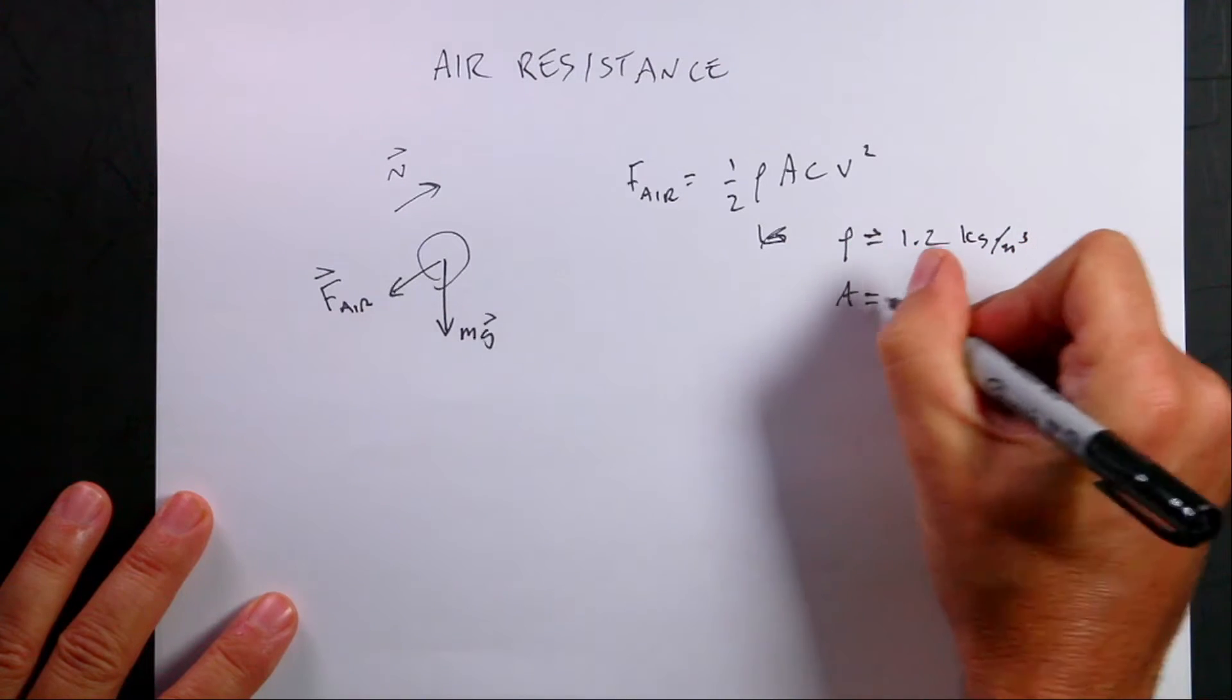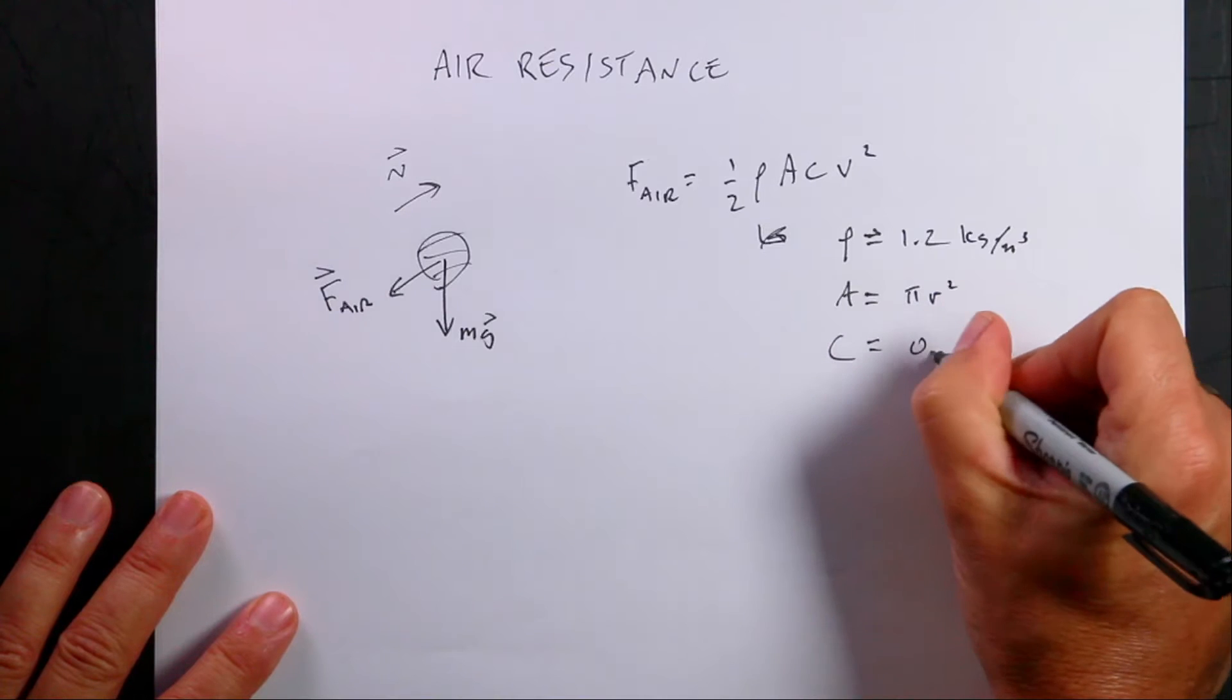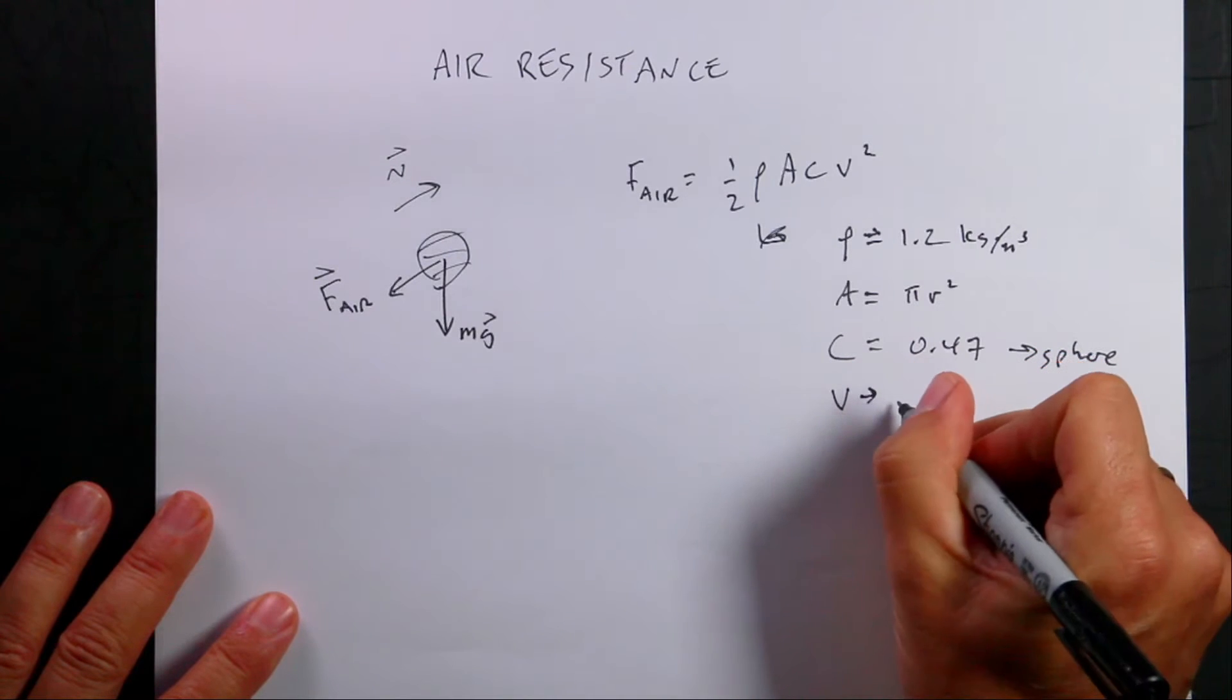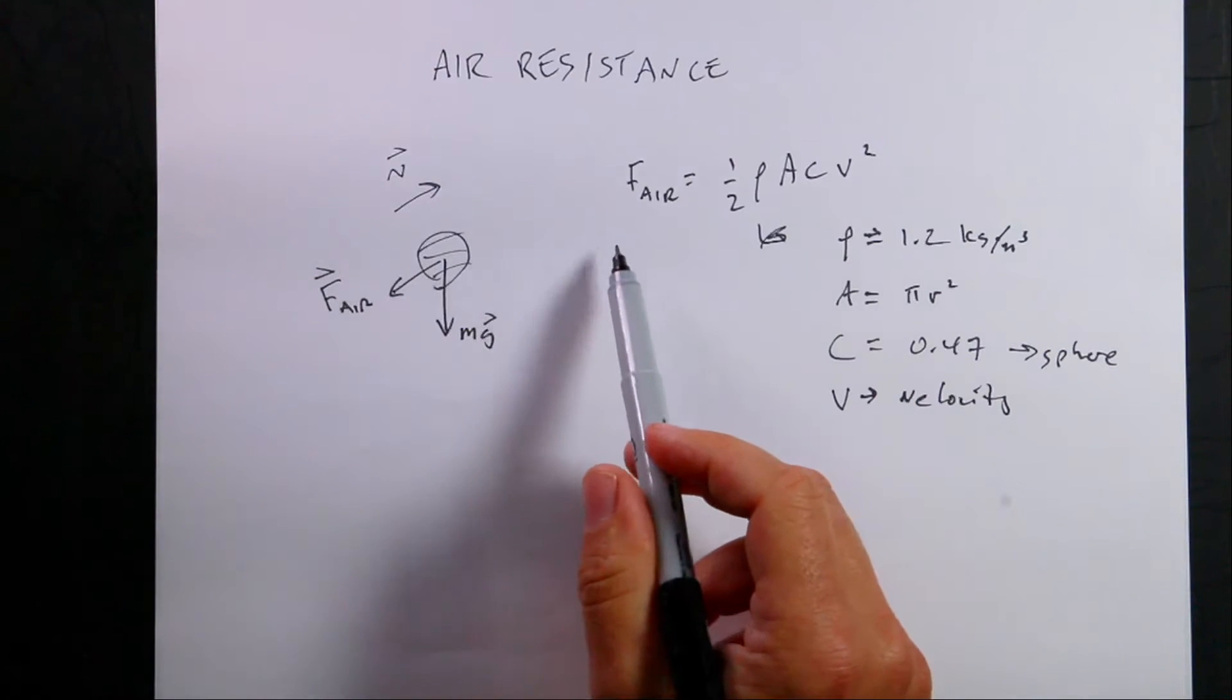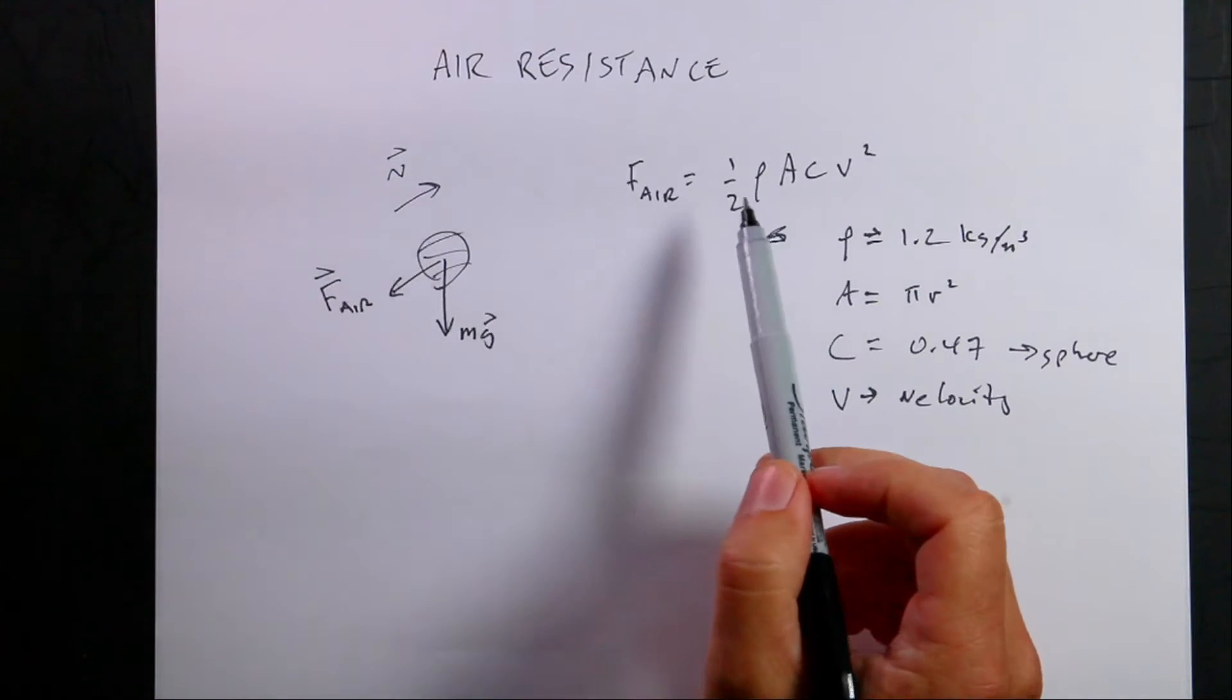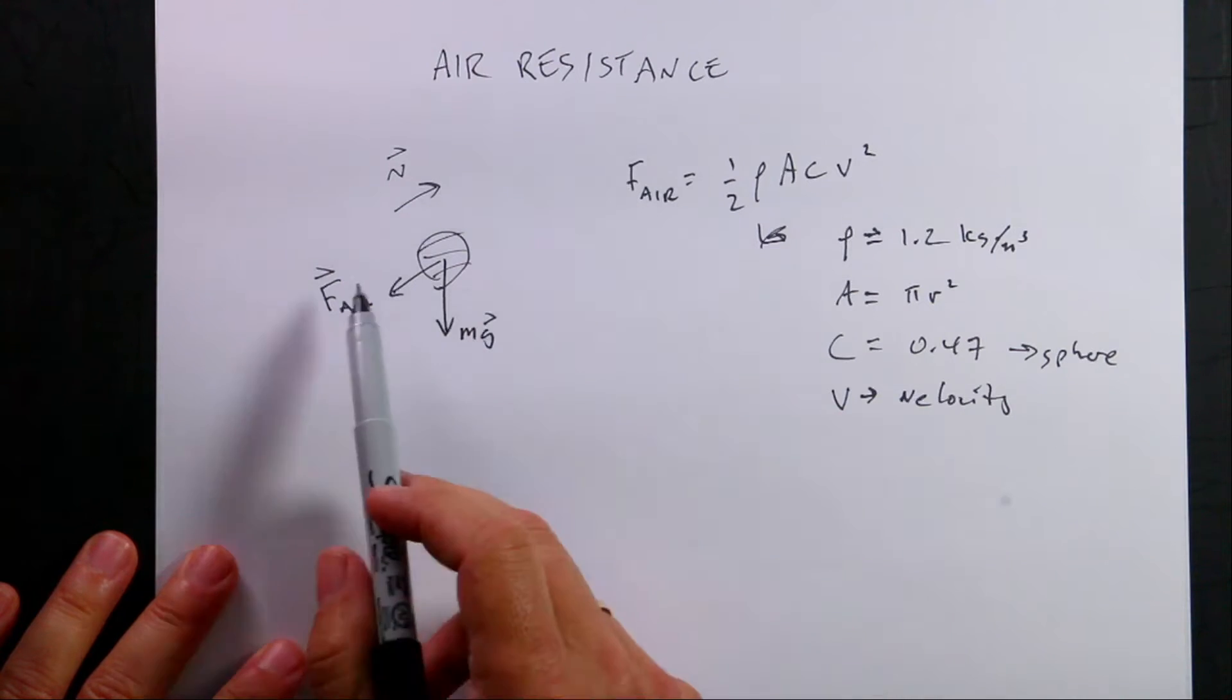A is the area of the ball, so this would be pi r squared, the cross-sectional area. C is the drag coefficient, 0.47 for a sphere, I'm pretty sure. And then v is the velocity. So you can see as this thing moves through the air, the velocity changes, and that makes this a really hard problem. It's difficult to solve analytically because that air resistance force changes. But we can't even use this because that's not a vector and this is a vector.